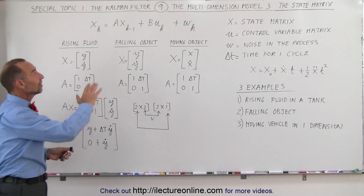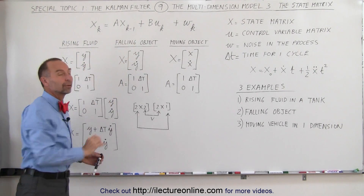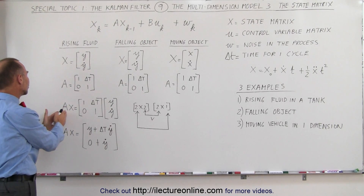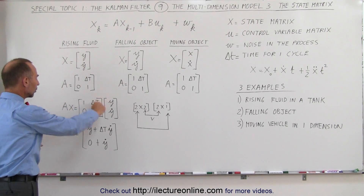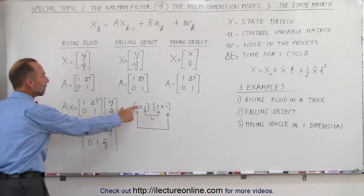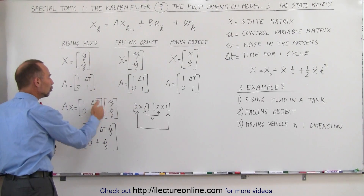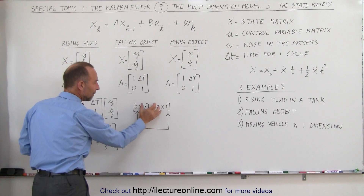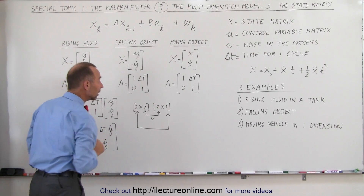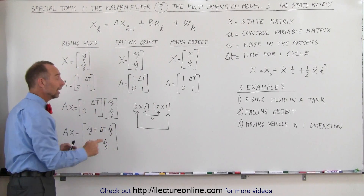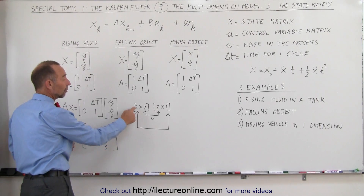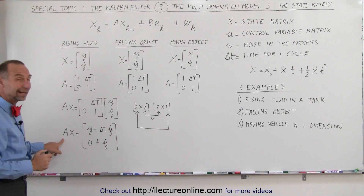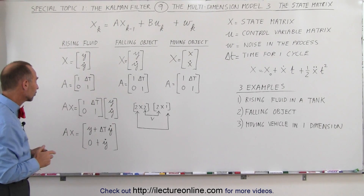That will not be the case for some of the other variables, but you'll see that later. When we multiply the A matrix times the state matrix, we multiply a 2x2 matrix times a 2x1 matrix. Since the inner two numbers match, we can indeed do that calculation, and the end result will be a 2x1 matrix — the result of multiplying A times the state matrix.